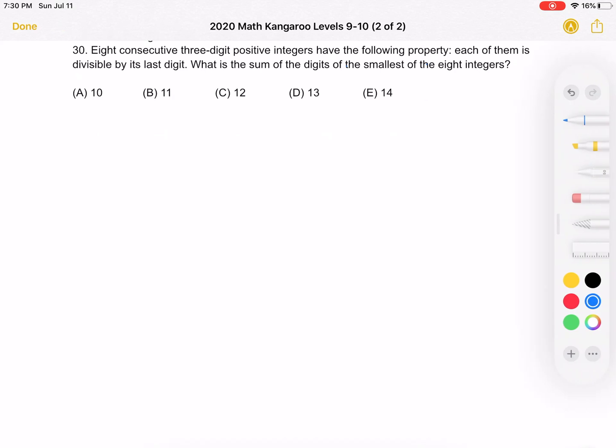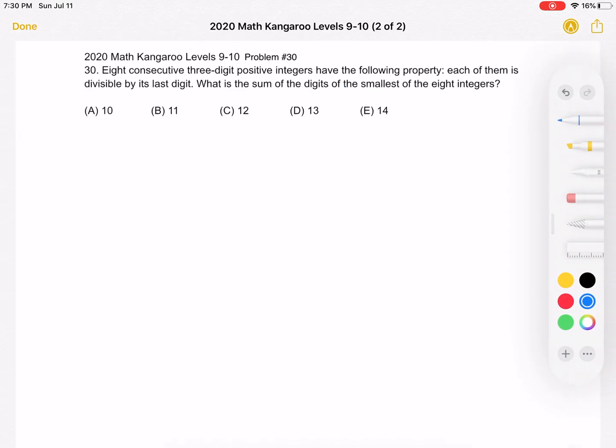Here is where we'll be doing the solution. To start, let's think about the different ranges of numbers that we could have in that last digit, such that these eight consecutive numbers, the last digit divides the entire three-digit number. We realize that we can't have the last digit be zero because we can't divide by zero.